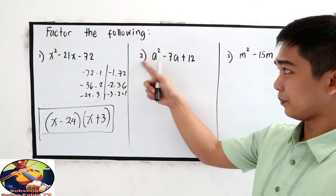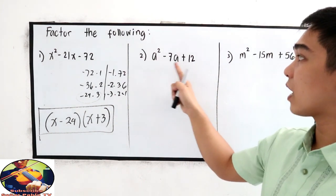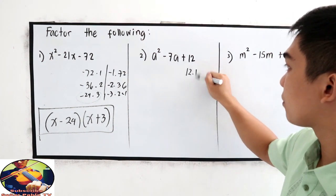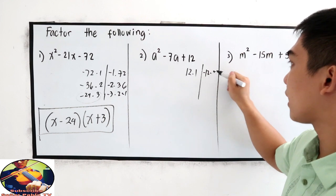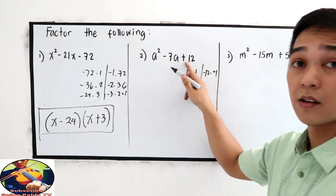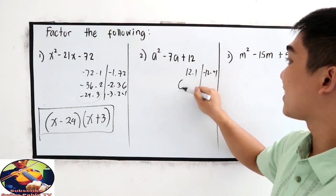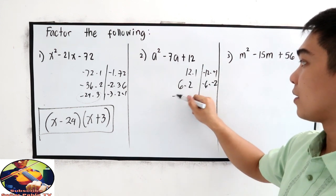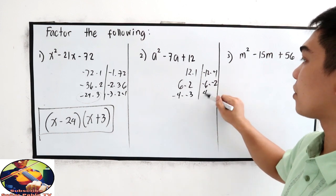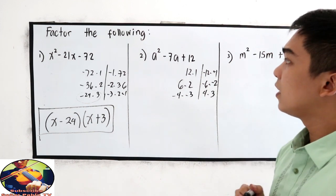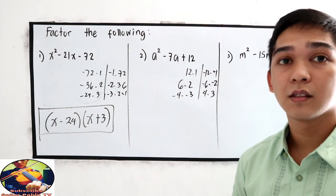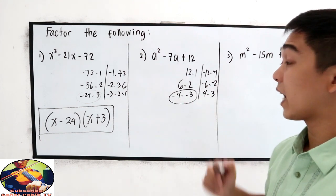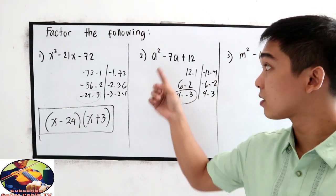Next, number 2. A squared minus 7a plus 12. Factors of 12 can be 12 times 1 or negative 12 times negative 1. 6 times 2 or negative 6 times negative 2? Negative 4 times negative 3 or 4 times 3? The sum must be negative 7. Obviously, that is negative 4 and negative 3 because the sum is negative 7.